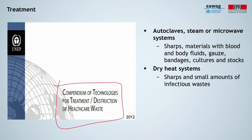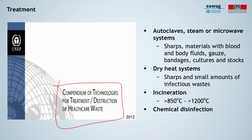Then there is also dry heat treatment technologies, where waste is heated up by conduction or thermal radiation. This requires higher temperature and longer exposure times than steam-based processes. They are commonly used to treat small volumes. Finally, there is of course also incineration, chemical treatment, or options for special landfilling and disposal.